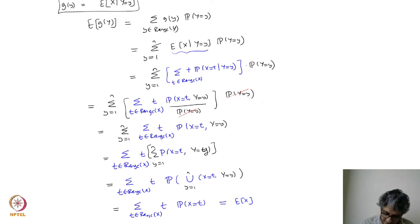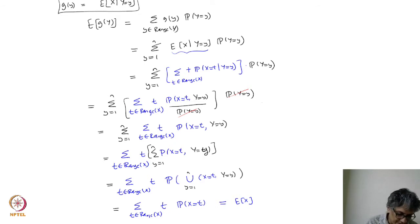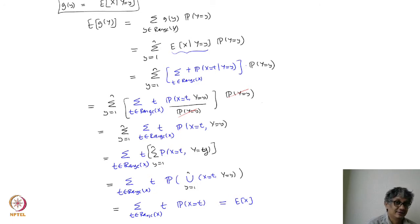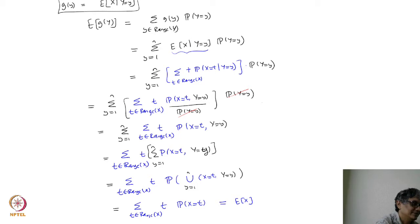In the last class we were doing this idea that if I take E of X given Y equal to y, and I average it out, then I get essentially that X partition of X. Let me just formally write that down as a theorem so that we understand it properly.